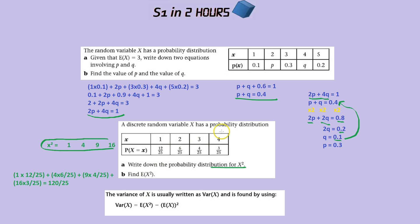You guessed it - by timesing and adding it up. That would be 1 times 12 over 25, 4 (which is 2 squared) times 6 over 25, 3 squared which is 9 times 4 over 25, etc. You add that all up and you get 120 over 25, which is the expected value of x squared.